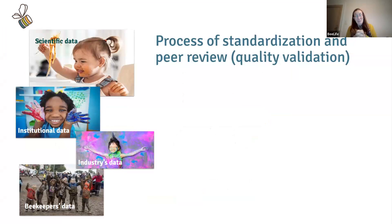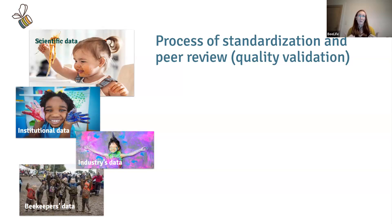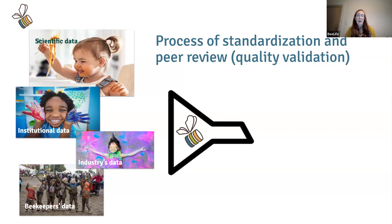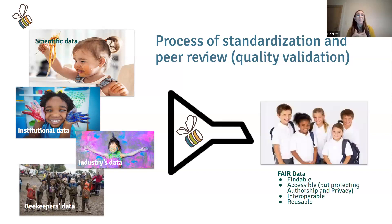Something very important is standardizing the data and peer reviewing it so the data can be of quality and can be reused. Many different data come from different sources: scientific data, institutional data, industry data, beekeepers data, farmers data. Each collective generates data for their own purposes with their own quality standards. What we do in the hub is pass this through a filter and obtain data that is reusable and interoperable by whoever wants to use it.